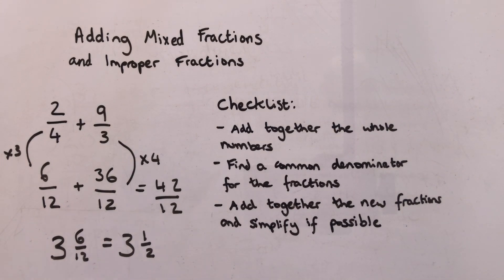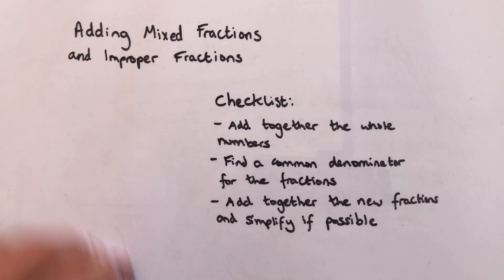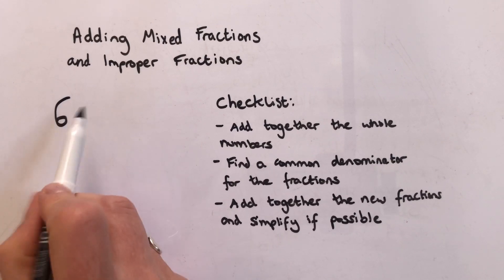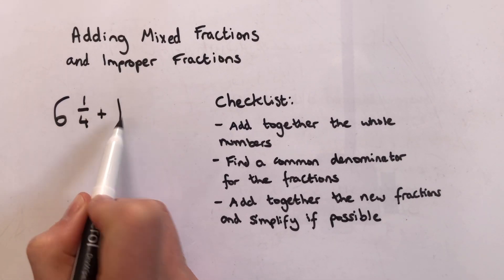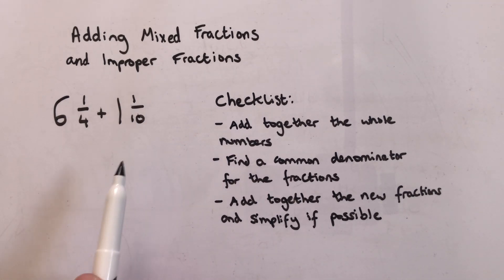Next we're going to have a look at what happens if you have mixed fractions to start off with. So if I have a whole number like six and a quarter plus a whole number and another different fraction, a tenth, what I can do is I can actually add together the whole numbers first of all.